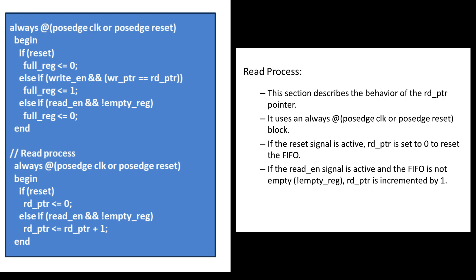Then we move to the read process. The read PTR register is incremented when the read enable signal is active. If reset is high, the read PTR value will be 0. Otherwise, if read enable is high and the empty register is low, the read PTR value will be incremented by 1. This is how we perform the read process.